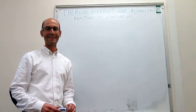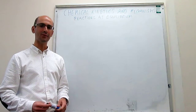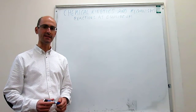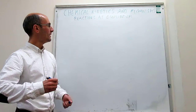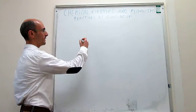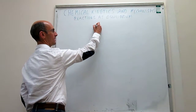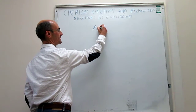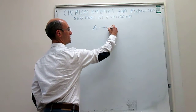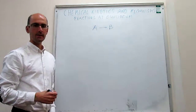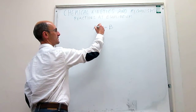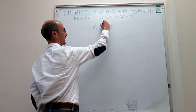In this video, we do a kinetic analysis of reactions that take place at equilibrium. Imagine that you have a pretty simple reaction, A going to B, that has a rate constant K.